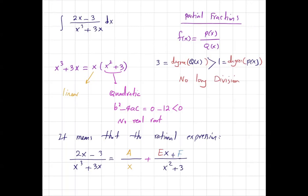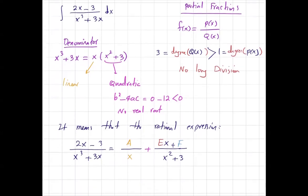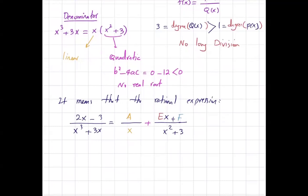In the method of partial fractions, first we broke down the denominator into smaller pieces. We factored the denominator as x — a linear term — times x squared plus 3, a quadratic expression. Since that quadratic has negative discriminant and no real root, it cannot be broken down into distinct linear factors. So the rational expression becomes A over x plus (Ex plus F) over (x squared plus 3).